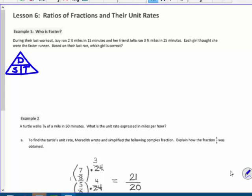So, who ran the fastest? We're finding their speed, which means I'm going to take the distance for Izzy. Speed is equal to distance divided by time. Her distance is 2¼, and I'm going to divide it by 15 minutes, her time. So, 2¼ divided by 15 is, I'm going to change that to 9/4, divided by 15 over 1.